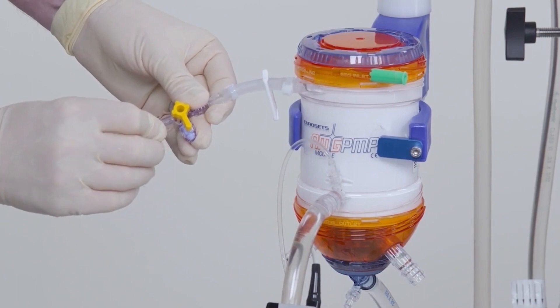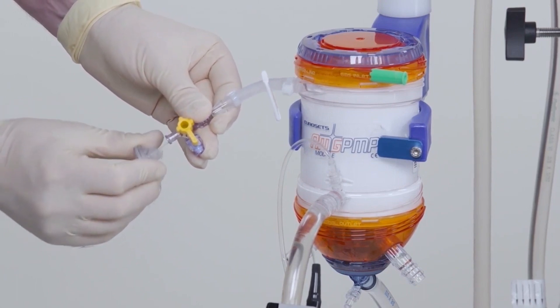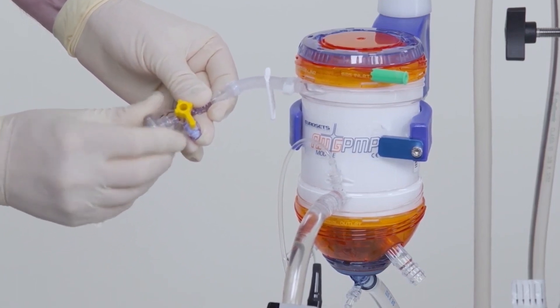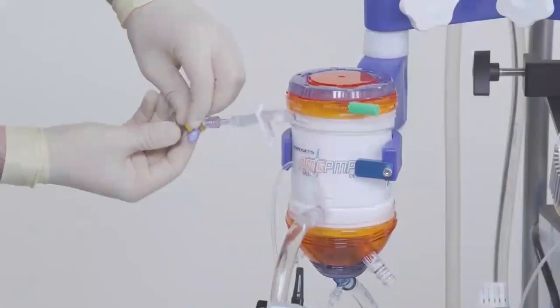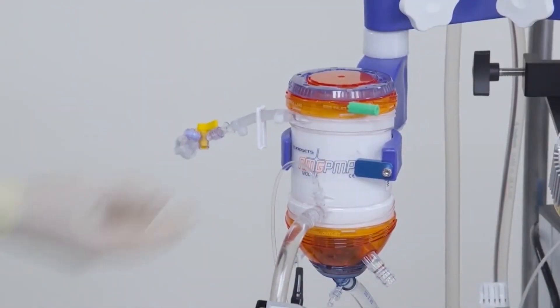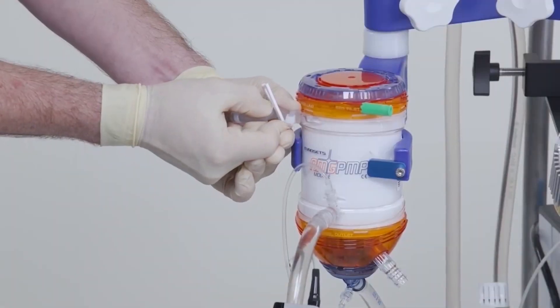If air is present, remove it through the purge line. Then close the stopcock and slide the white clamp closed.